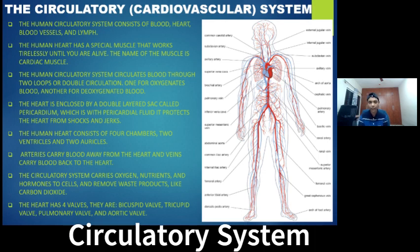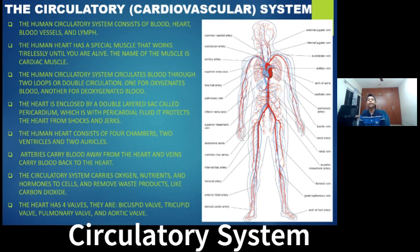That is counted as one circulation. The heart is enclosed by a double-layered sac known as the pericardium, which is filled with pericardial fluid. This pericardial fluid prevents shocks and jerks during contraction.